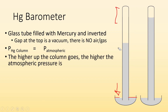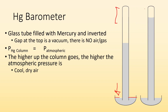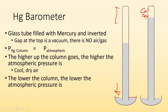The higher up the column goes, the higher the atmospheric pressure is. The barometer on the right is at a greater pressure than the barometer on the left. This higher pressure happens more often with cool dry air, because the air is more dense. On the left, the lower column means lower atmospheric pressure — this tends to be for warm and moist air, which is less dense, so there's less pressure.